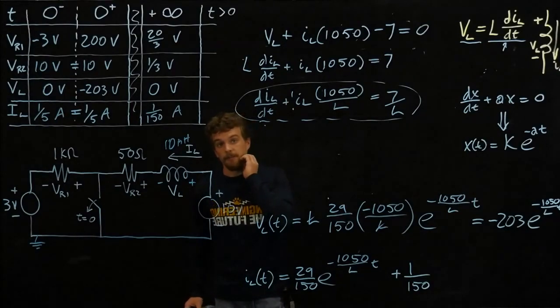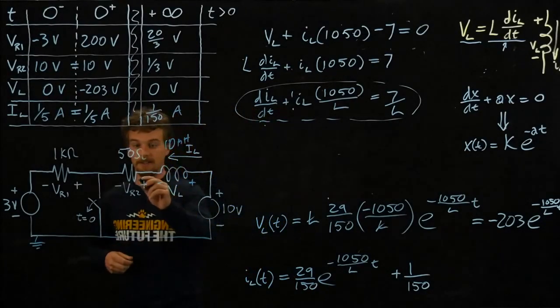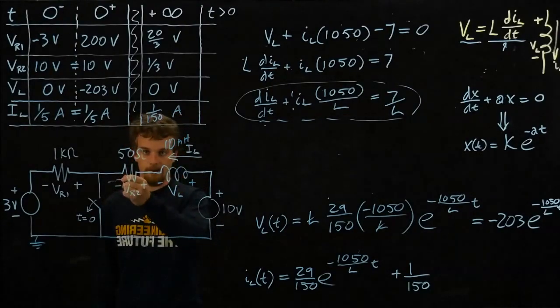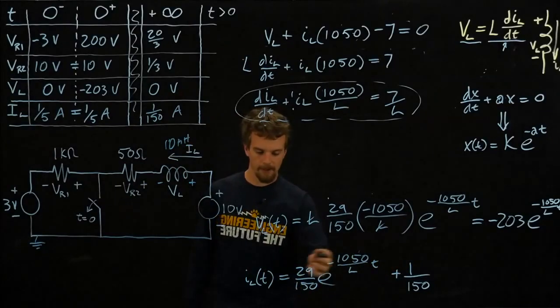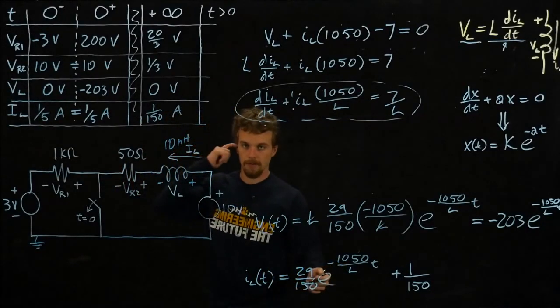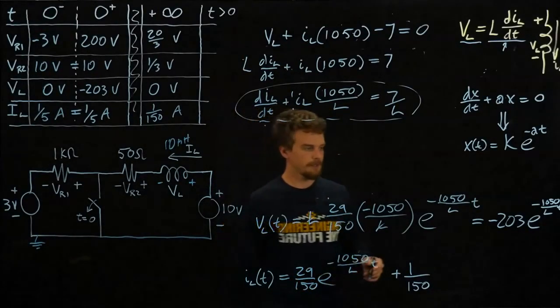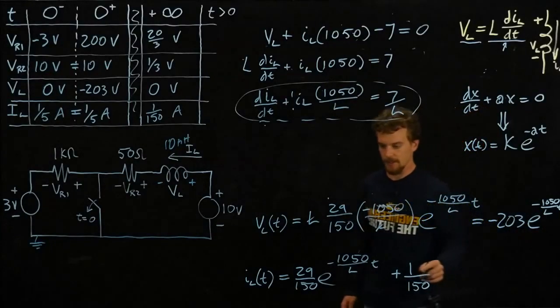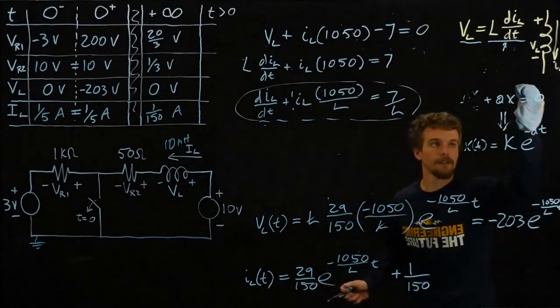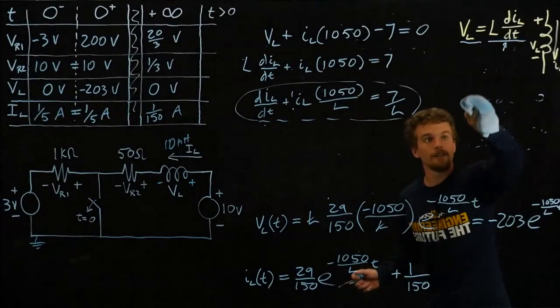What else would we like? Actually, that's good for today. If you wanted time expressions for, say, the voltages across these resistors, well, those voltages would depend on the current through them, and we have an expression for the current. So we would use V equals IR. We would take this expression and multiply it by the resistor values to get the voltages across them. So yeah, I think that's good.